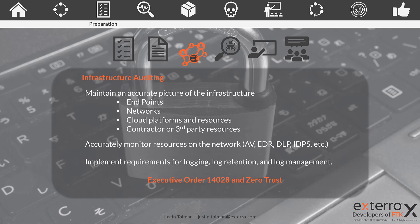In addition to maintaining an accurate picture, you do need to be able to respond to those devices as per Zero Trust. Things like the FTK Enterprise Agent — which can remediate, collect, and even preview on any box where the agent is installed — will allow you to do both of these with one solution. You need to actively monitor the resources on the network using antivirus, endpoint detection and response, data loss prevention, and packet capture for monitoring all network activity.